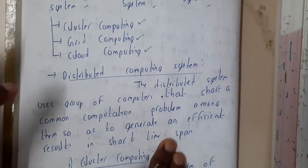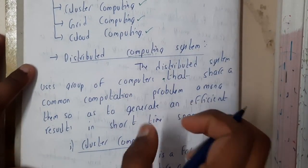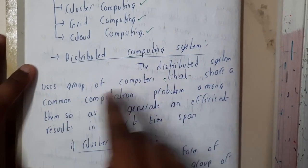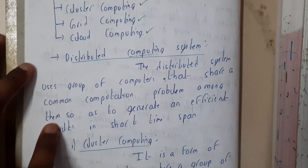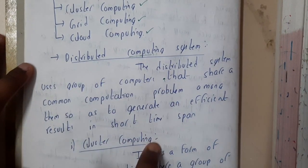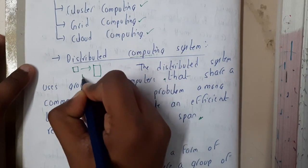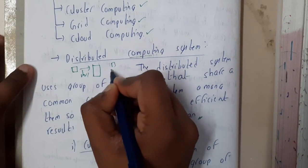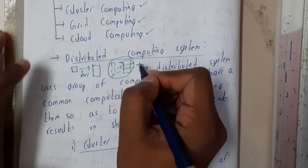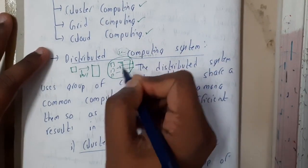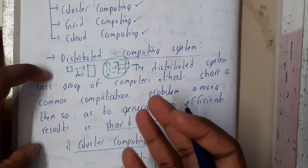Now let us go through distributed computing systems. Computing is nothing but solving a single problem with multiple systems. The distributed system uses a group of computers that share a common computation problem among them so as to generate an efficient solution in a short span of time. For example, if a single system working on large data takes one hour, three systems dividing that data into three parts would finish in just 20 minutes.